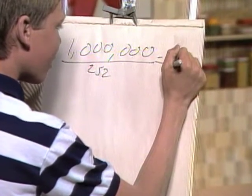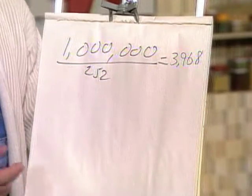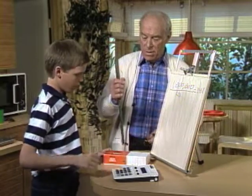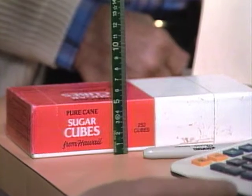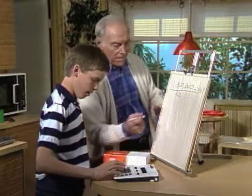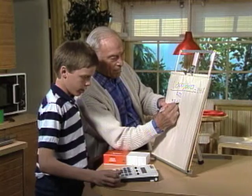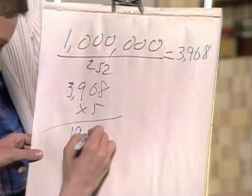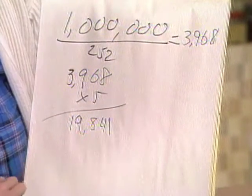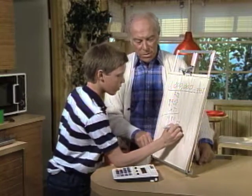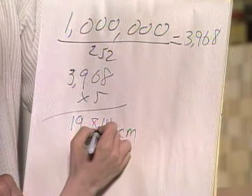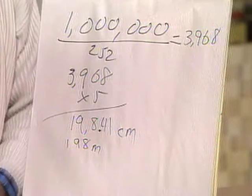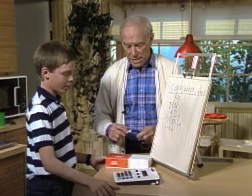That's a lot — almost 4,000 boxes. Well, how big a stack would that make? First you have to figure out the height of one box, which is 5 centimeters. Multiply by 3,968 equals 19,841 centimeters. That's 198 meters tall. We'll go outside later and take a look at how really tall that is.